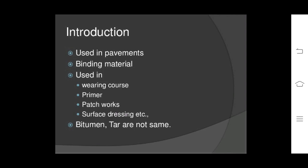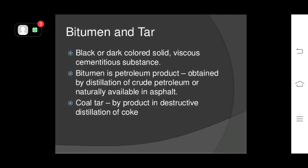The bitumen is generally used for pavements as a binding material. It is used in varying course of road as a primer, patchworks, surface dressing, etc. Bitumen and tar are not the same. Bitumen is a black or dark colored solid viscous cementitious substance. It is a petroleum product obtained by distillation of crude petroleum or naturally available in asphalt, whereas coal tar is a by-product in destructive distillation of coke.